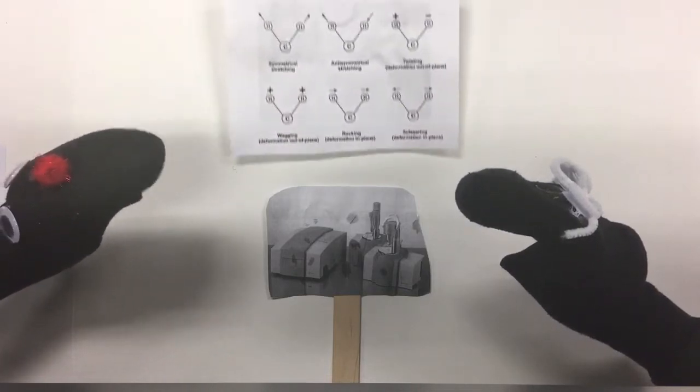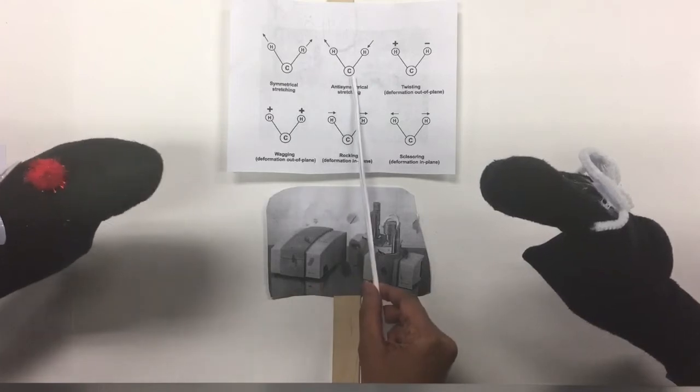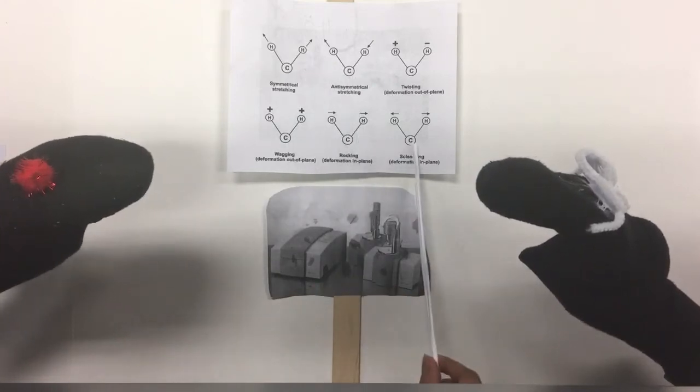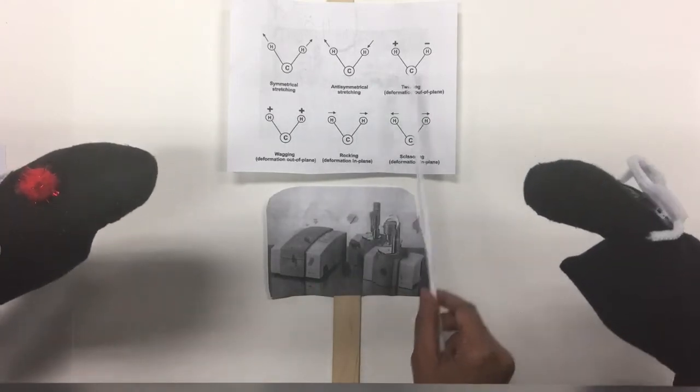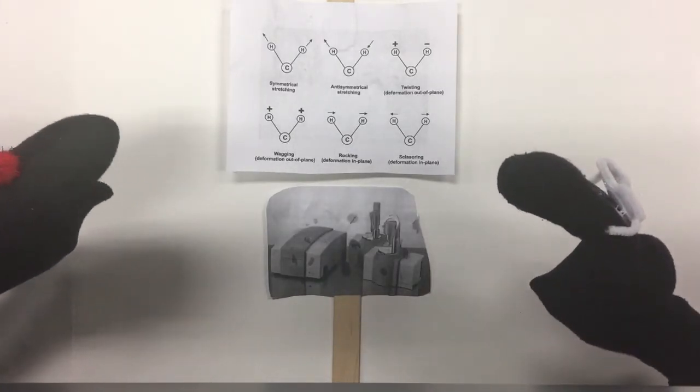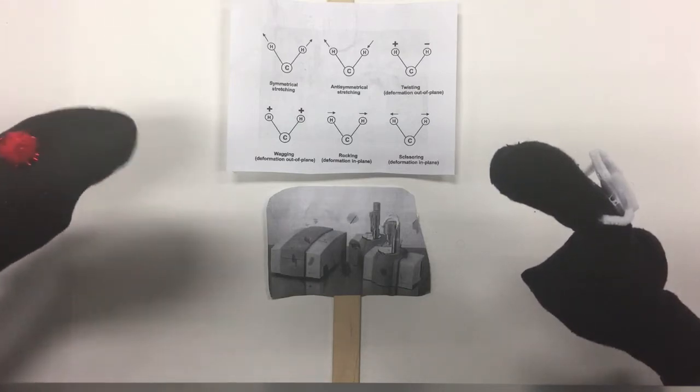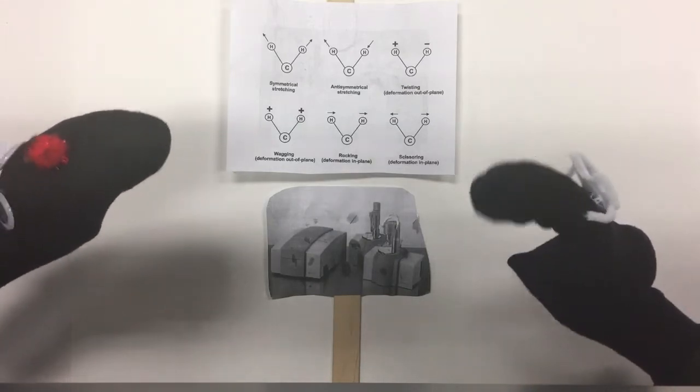There are six different types of vibrations: symmetric, asymmetric, rocking, scissors, twisting, and wagging. These molecules undergo a vibrational energy level change if there's a change in dipole moment, which we can detect. Does that make sense? Yes, sort of.